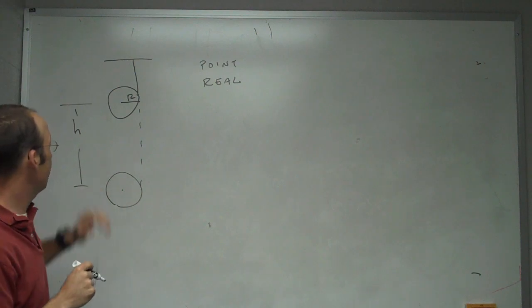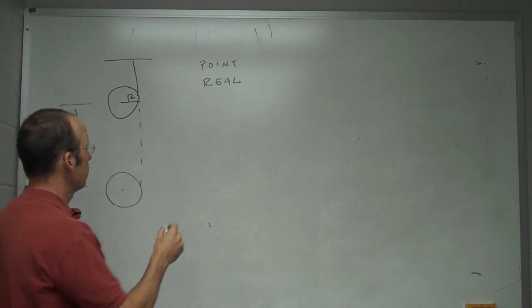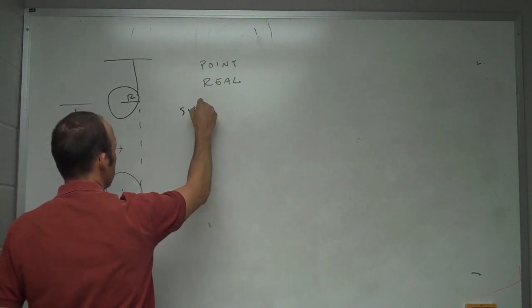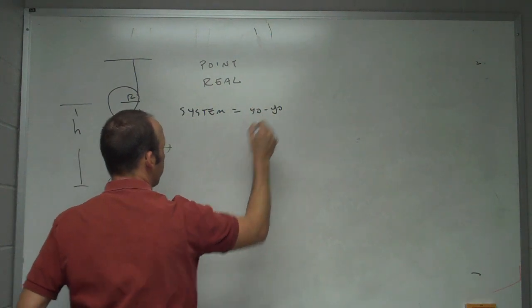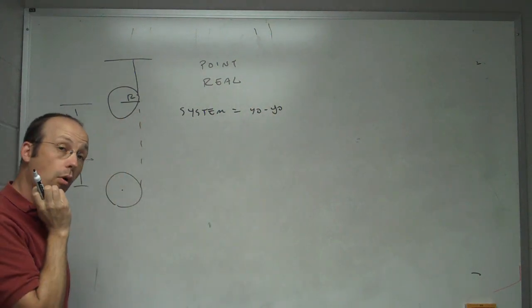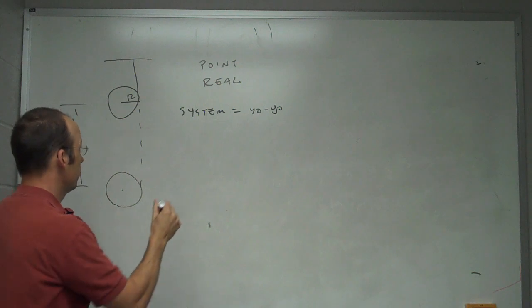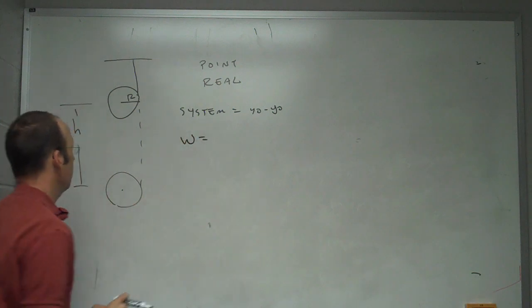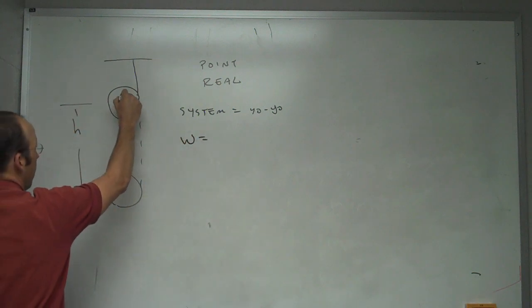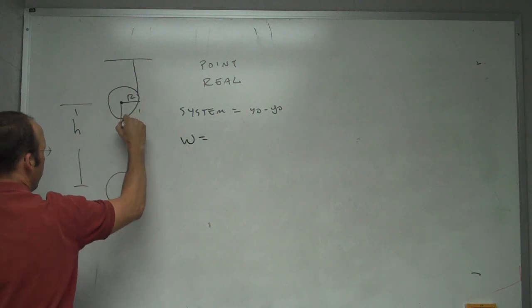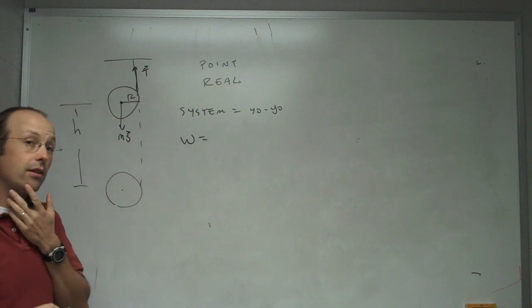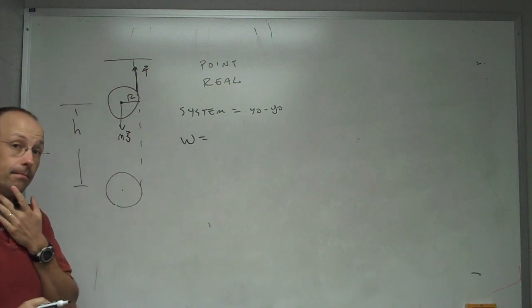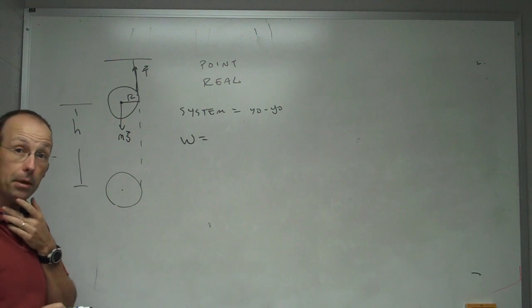So in the real system, the system is my yo-yo. So what work is done on the yo-yo? The work is going to be done, let's draw a free body diagram. Here's my gravitational force, mg, and then I have tension right there. Do you think those two forces are the same? They're not. They can't be.